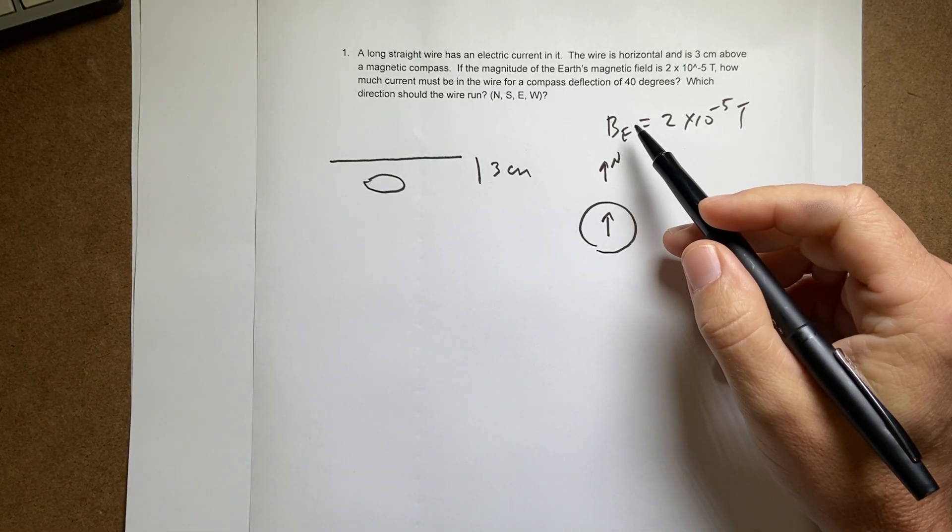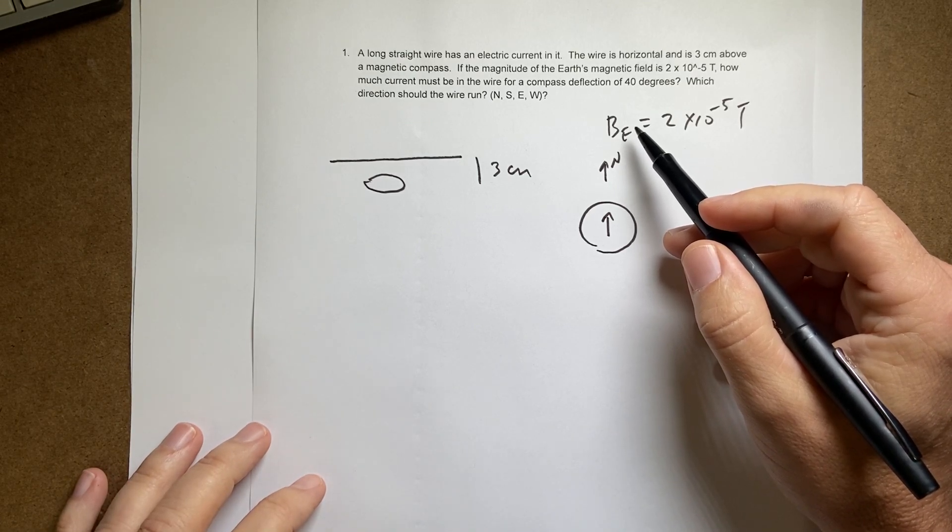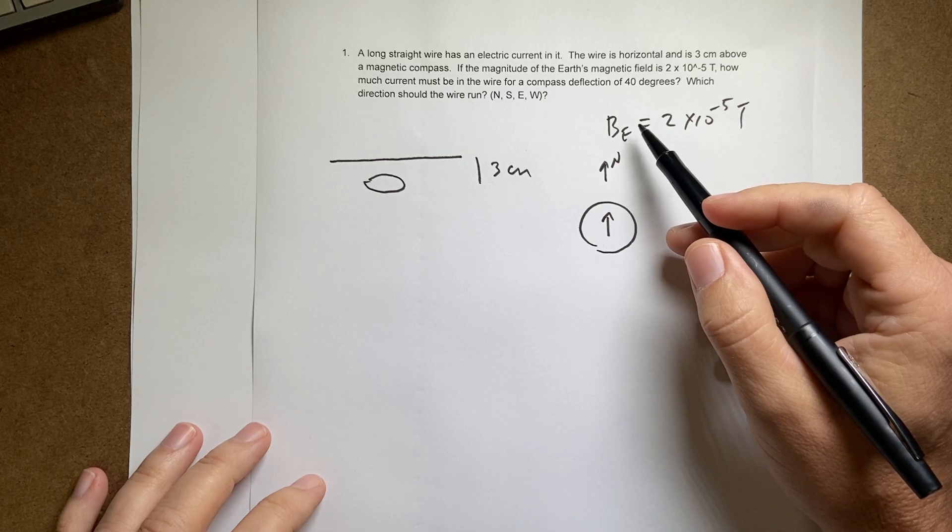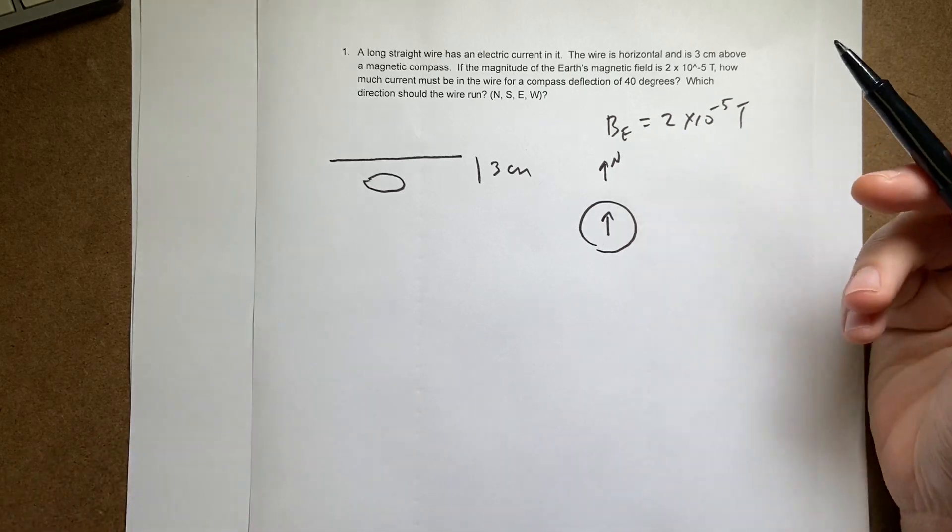If I want the compass to point this way, this is north. And so just as a quick note, the Earth's magnetic field is not parallel to the surface of the Earth. It actually changes depending on your location on the Earth. It has a large vertical component too.